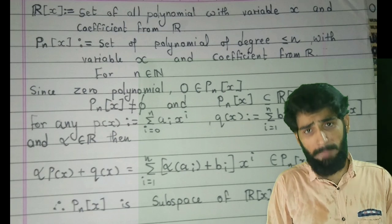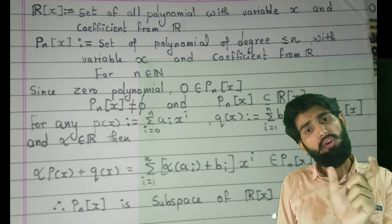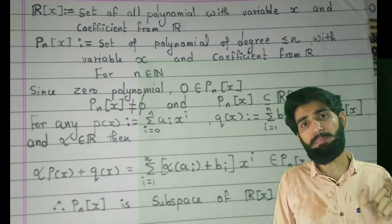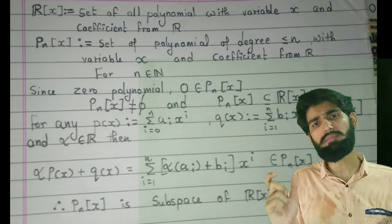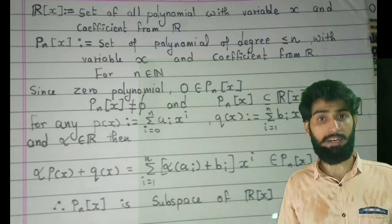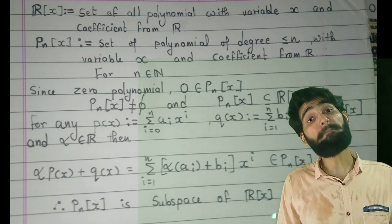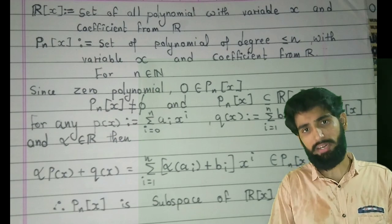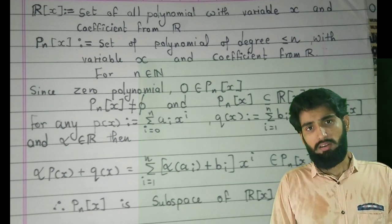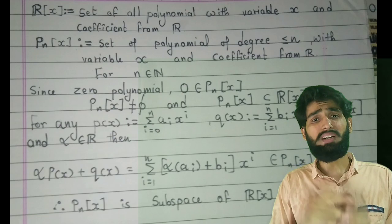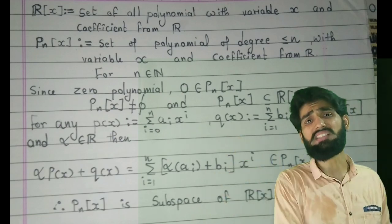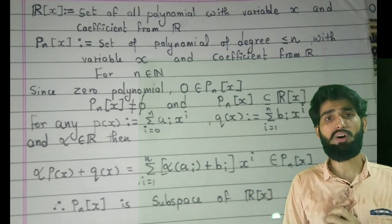But here the coefficients are real numbers, they can be 0. It might be possible my a_n is 0, hence that p(x) becomes a polynomial of degree n minus 1. It is simple to write every polynomial in terms of n terms, the polynomial of degree n. It might be possible it is a constant polynomial - my a_1, a_2, a_n everything is 0 - but it is easy to write in this pattern.